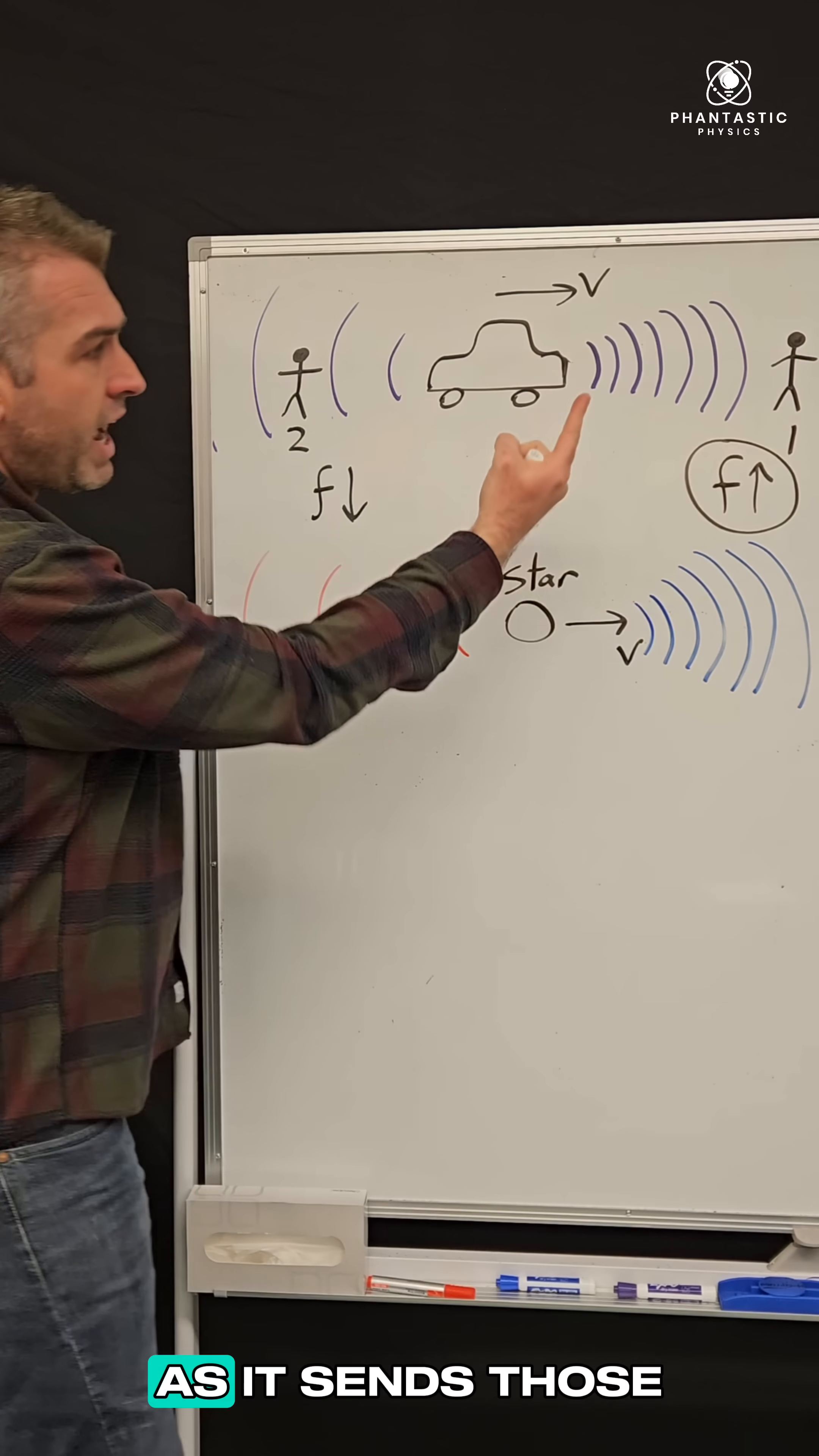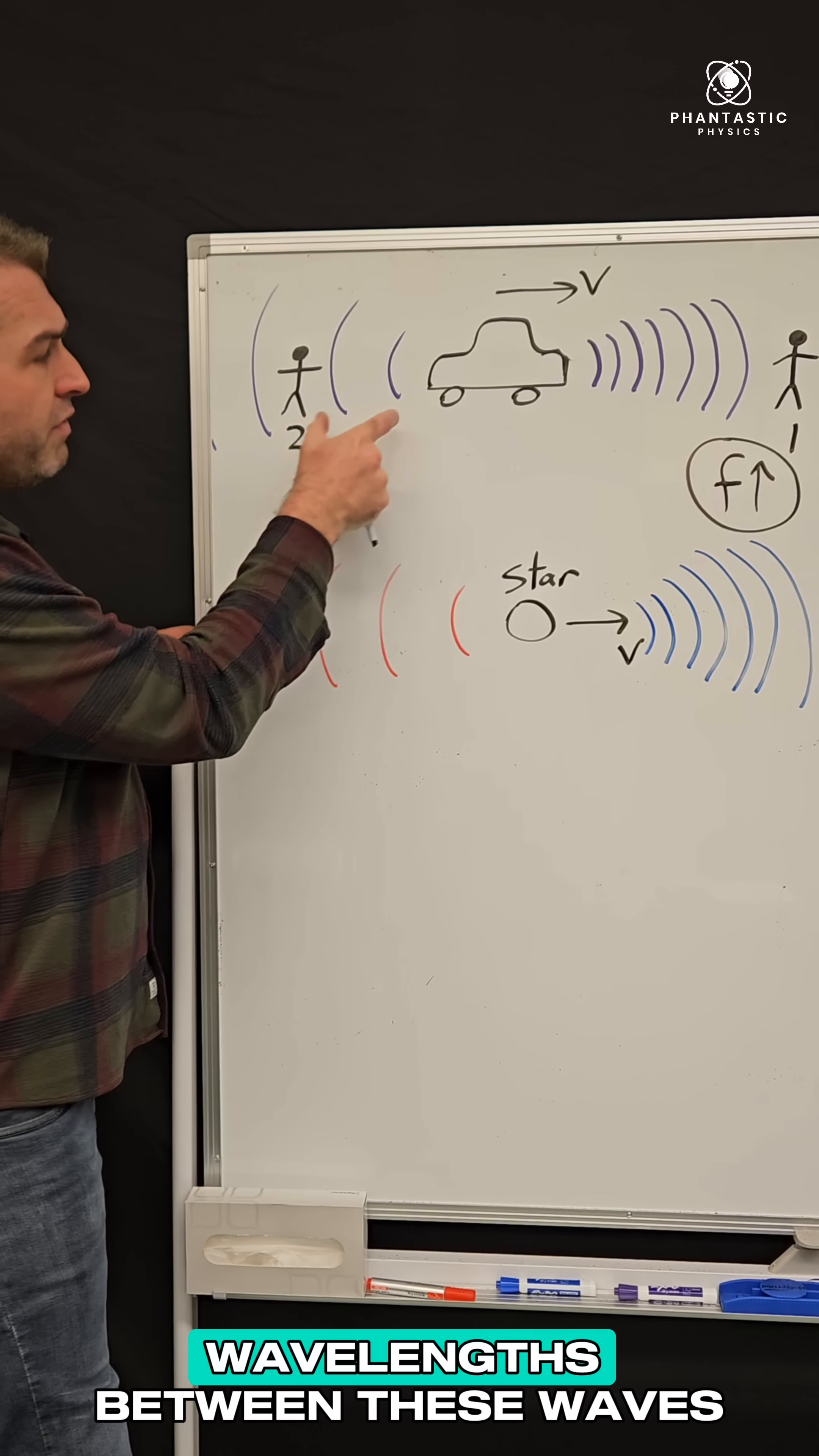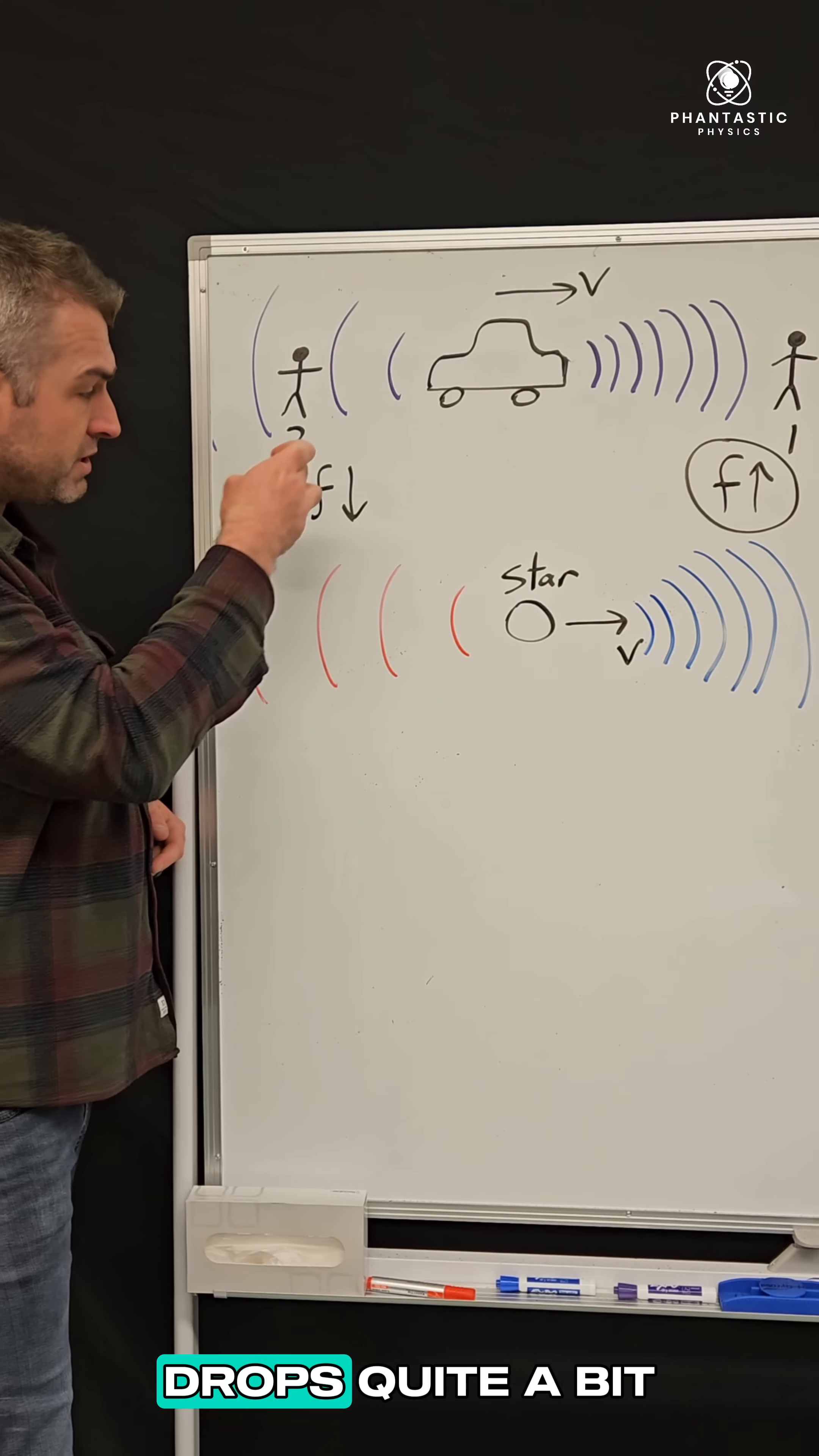Now the person in position two, since the car is moving away from them, as it sends those waves out towards this person, the car is actually getting further and further from the waves simultaneously. And that causes the wavelengths between these waves to actually get really big, so much higher wavelengths.